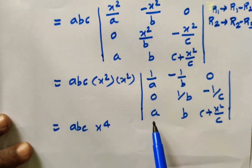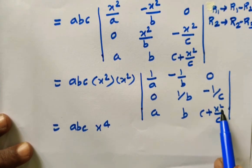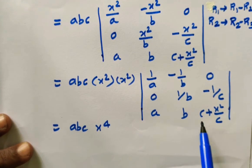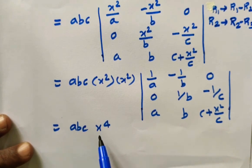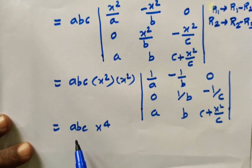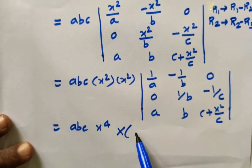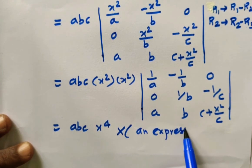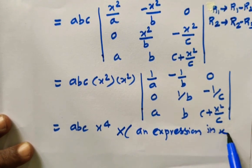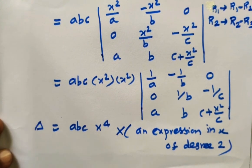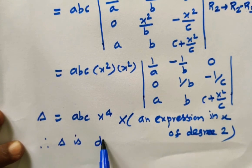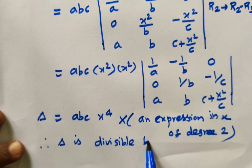This expression contains x to the power 4 as a factor, meaning the remaining determinant expression is in x of degree 2. Since x⁴ is factored out and multiplied into the determinant value, therefore delta is divisible by x to the power 4. Hence the problem is proved — delta is divisible by x⁴.